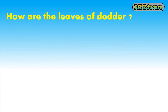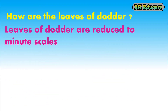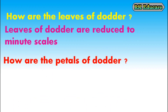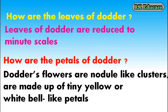How are the leaves of Dodder? The leaves of Dodder are reduced to minute scales. How are the petals of Dodder? The Dodder's flowers or nodule-like clusters are made up of tiny yellow or white bell-like petals.